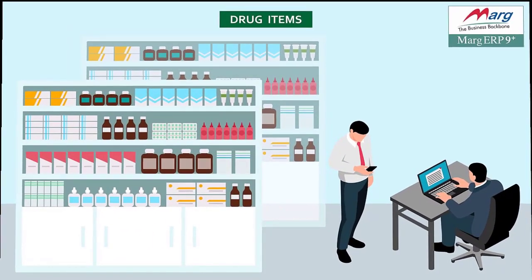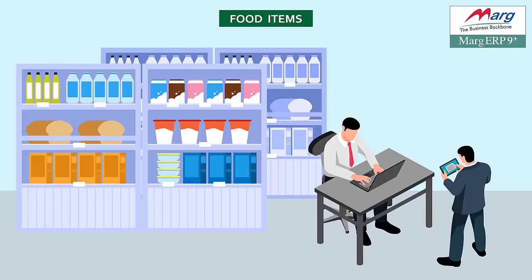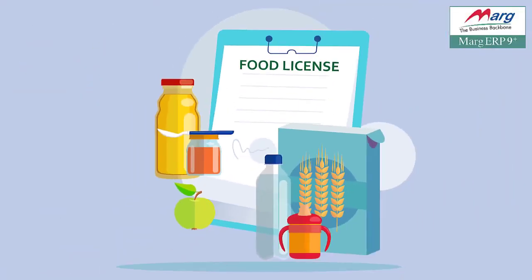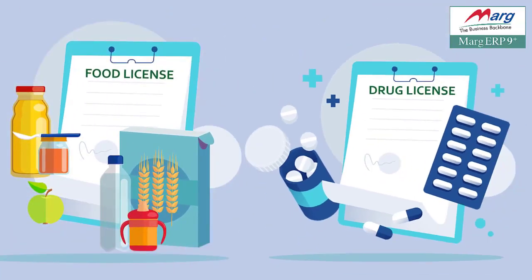Those people who deal with items related to drugs, or those who deal with products related to food license — there are some products for which a food license is mandatory and cannot be sold without it. Similarly, a drug license is mandatory to sell medicines; without a drug license you cannot sell medicines.